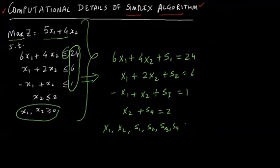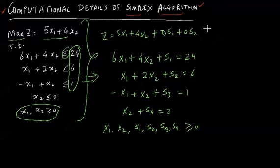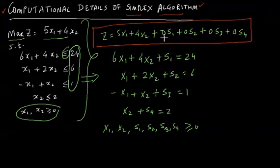So now we have 6 variables and all of them are greater than or equal to 0. Now the objective function changes to this. You already had 5x1 plus 4x2, but now there are many variables apart from x1, x2. But they have no contribution to make in the objective function, so their contribution is 0. They are not contributing anything, but we are just writing it so that we follow the standard notation for an LP model.